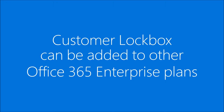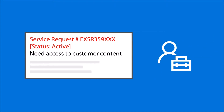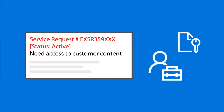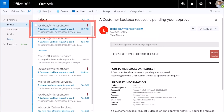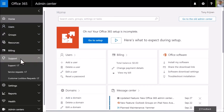Once you have Customer Lockbox enabled, all you need to do is file a service request as you normally would. If the Microsoft support engineer needs to access your private data, they create a lockbox request. After the request is approved by a Microsoft manager, you receive an email notifying you that the engineer has requested access. To approve the request, login to the Office 365 admin center and under Support, go to the Customer Lockbox Requests page.